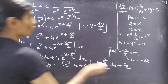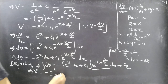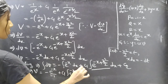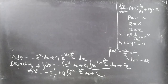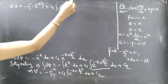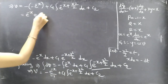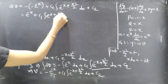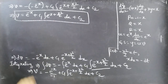Integrating both sides: ∫dv = -∫e^(-x) dx + C₁∫e^(-x + x²/2) dx + C₂. Note that the second integral is not integrable in closed form, so we leave it as is. Therefore: v = e^(-x) + C₁∫e^(-x + x²/2) dx + C₂. We now have both u = eˣ and v.